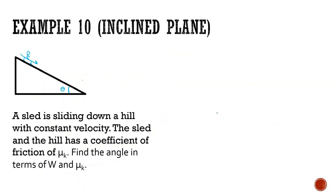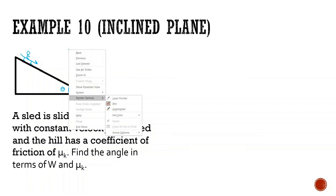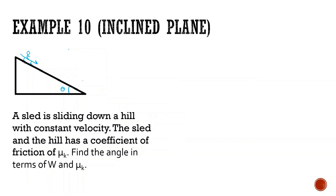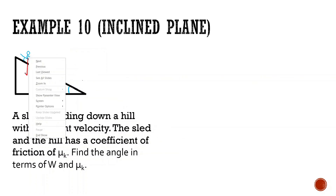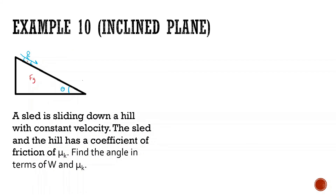A sled is sliding down a hill with constant velocity. The sled and the hill have a coefficient of friction of mu k. Find the angle in terms of w, the weight, and mu k. This is a bit more tricky because we only have symbols. Let's draw everything: force of gravity going straight down, then normal force perpendicular, then force of friction. My recommendation is to rotate it — force of gravity looks like this, and then force normal and force of friction.